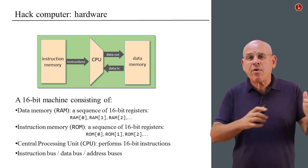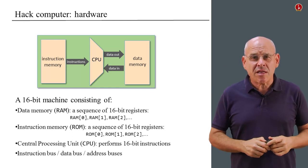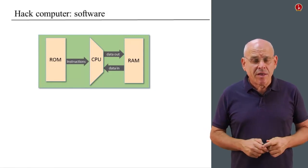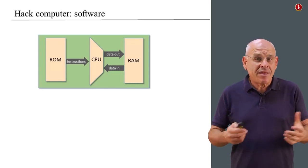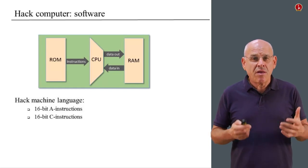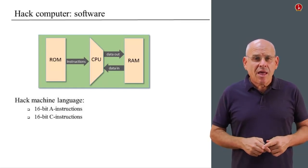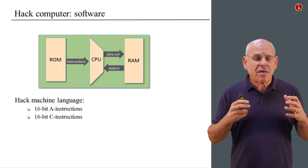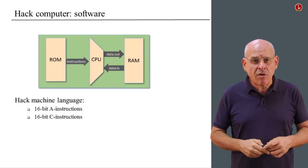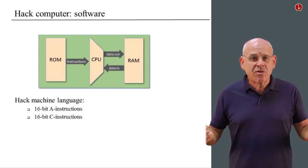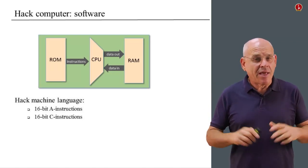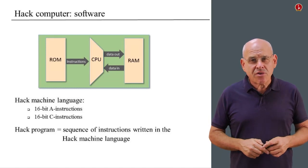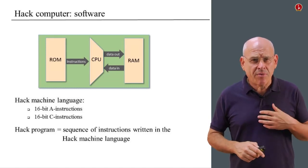You can think about the buses as highways of 16 lanes, moving chunks of 16 bits from one place to another. So how do we control this computer? We have software, and at this level the software consists of machine language — the program that we write using machine language. When we designed this computer and this machine language, we decided to create two categories of instructions, which we call A instructions and C instructions. Each one of these instructions is specified as a 16-bit number, like everything else in this machine. A HEC program is essentially a sequence of instructions — 16-bit numbers written in the HEC machine language.